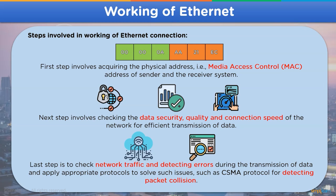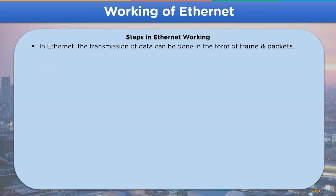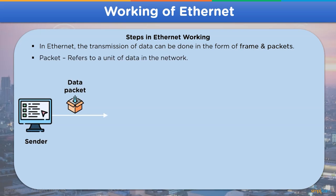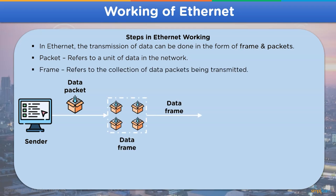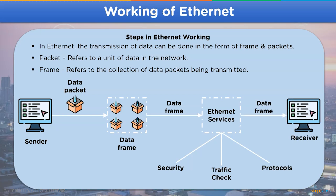The last step is to check network traffic and detect any errors that occur in the communication channel. To solve these issues, CSMA protocols and other protocols are used. For example, the CSMA protocol is used in case of packet collision in the network channel. The transmission of data over the Ethernet channel is divided into two parts: frames and packets, where packets represent a unit of data in the network, whereas a frame refers to a collection of data packets being transmitted over the channel. Ethernet services including security, traffic check, and protocols are applied on the data when it reaches the receiver end.